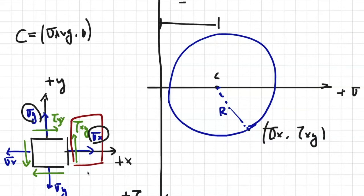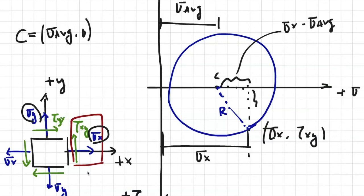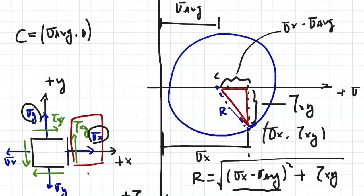We can now confirm the equation for the radius of the circle by doing some geometry here. So this length is just sigma average. And then we have another length that's just sigma x. And the difference between these lengths is just sigma x minus sigma average. Then this length right here is simply tau xy. And by looking at this right triangle and using Pythagorean's theorem, we can obtain the radius of the circle, which is written here under the square root. It actually confirms our original equation for obtaining the radius r of Mohr's circle. So Mohr's circle is very useful for visualizing the stresses on the material.